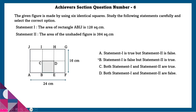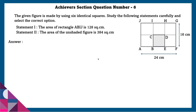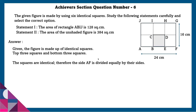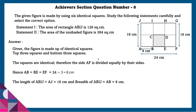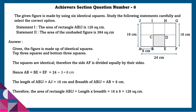Achieve section question number 6: The given figure is made up of 6 identical squares. Study the following statements carefully and select the correct option. Statement 1: the area of rectangle ABIJ is 128 square centimeters. The figure has top 3 squares and bottom 3 squares, all identical. Therefore side AF is divided equally, so AB = BE = EF = 8 centimeters each. The length of ABIJ is AJ = 16 centimeters and breadth AB = 8 centimeters. Area = 16 × 8 = 128 square centimeters. Statement 1 is correct.